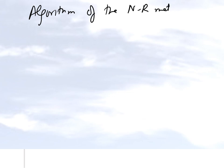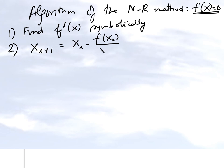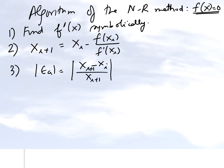We are trying to find the root of f(x) = 0. The first step is to find f'(x) symbolically — we find the derivative of the left-hand side of the equation. Then we apply the Newton-Raphson formula to find the next estimate of the root, starting with some initial estimate. We also calculate the absolute relative approximate error, which is the current approximation minus the previous approximation divided by the current approximation, multiplied by 100 for a percentage.